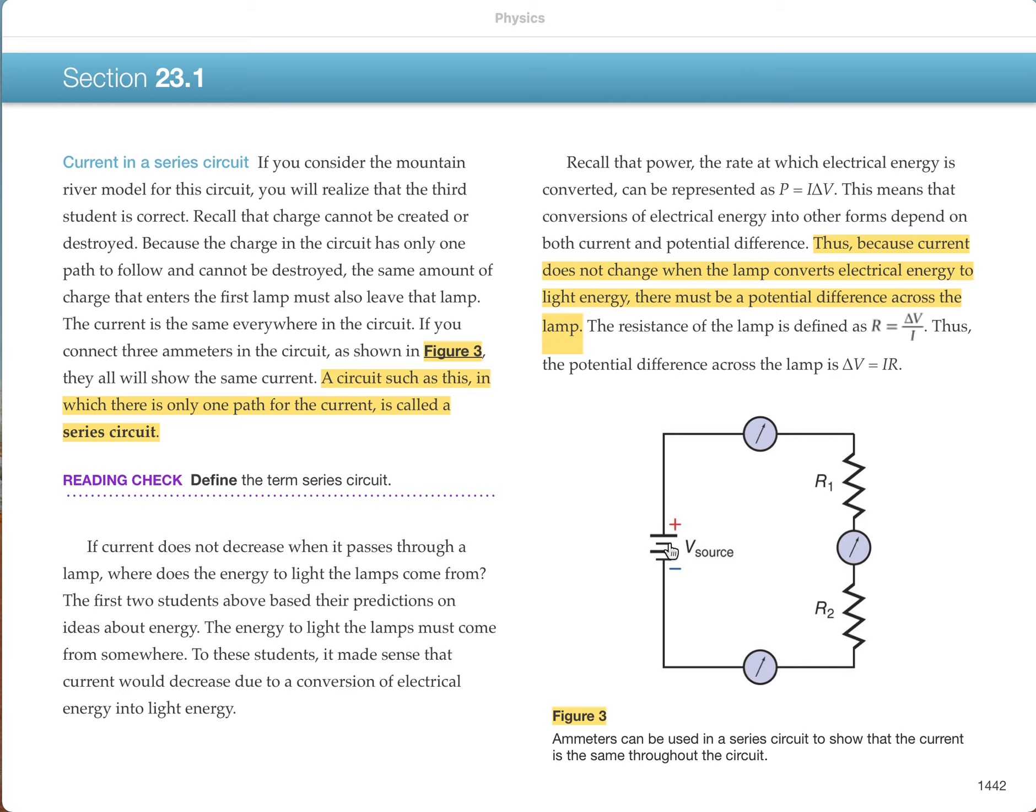But you also know that something gets used up in a circuit. Something makes the battery run out. So if the current's not changing in the circuit, what is changing? And the answer is, as the current, which is the flow of charges, passes through the resistor, each charge gives its energy to the resistor.